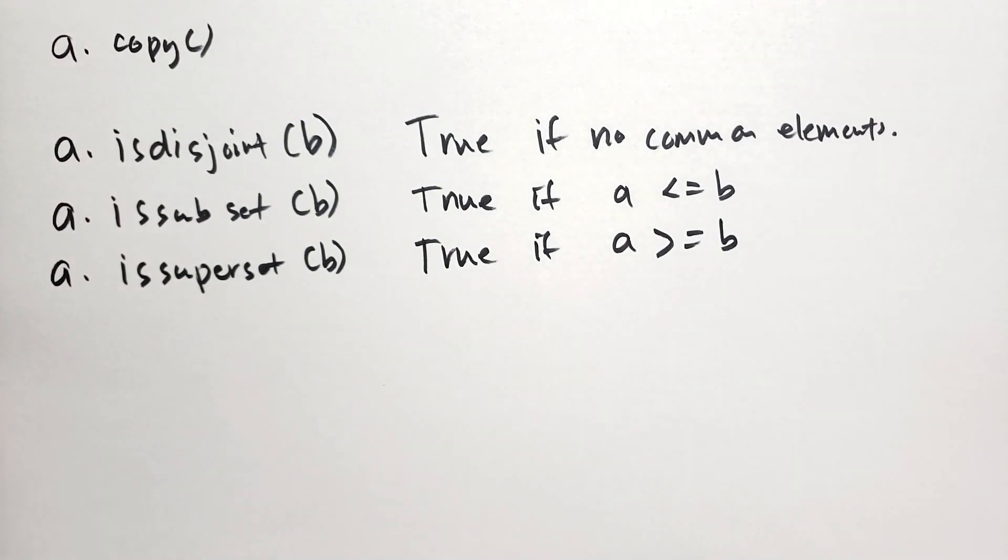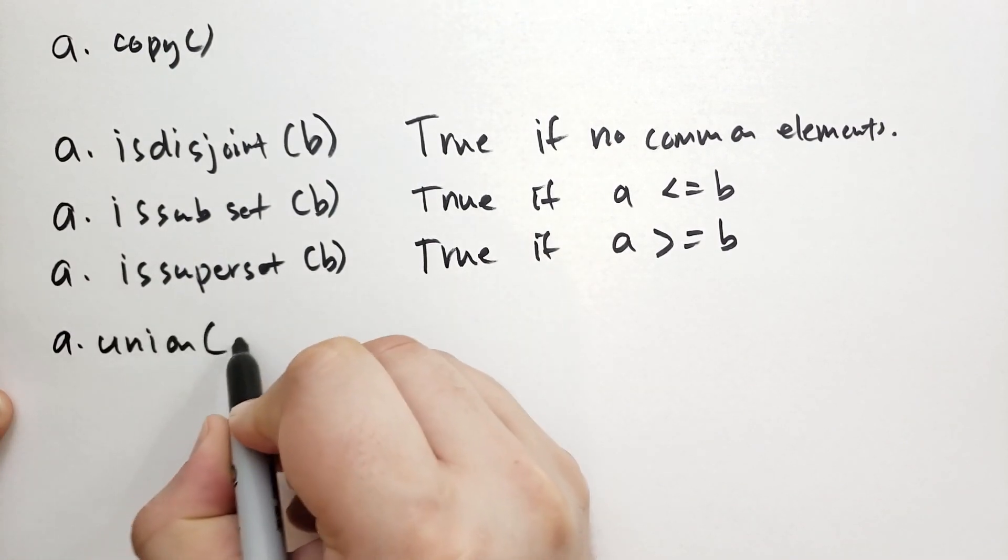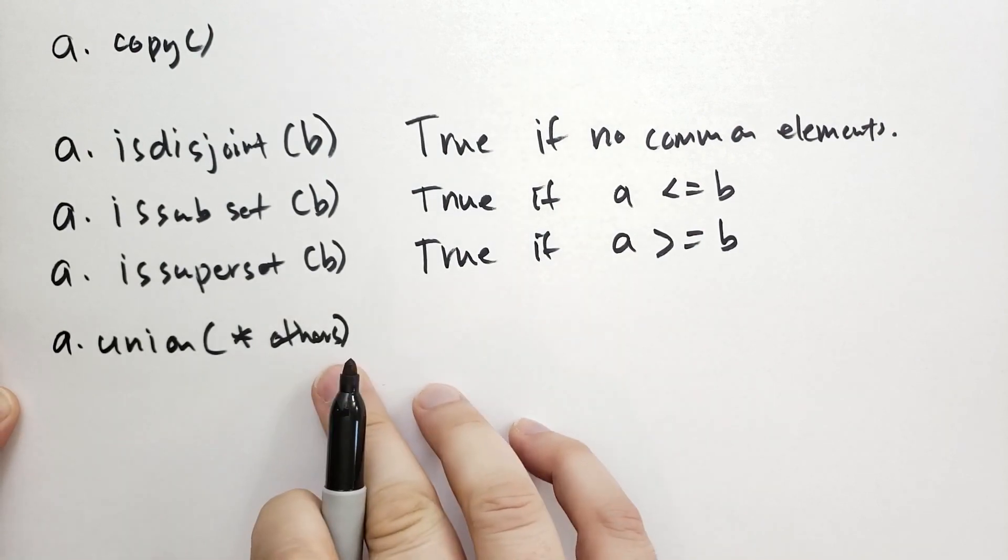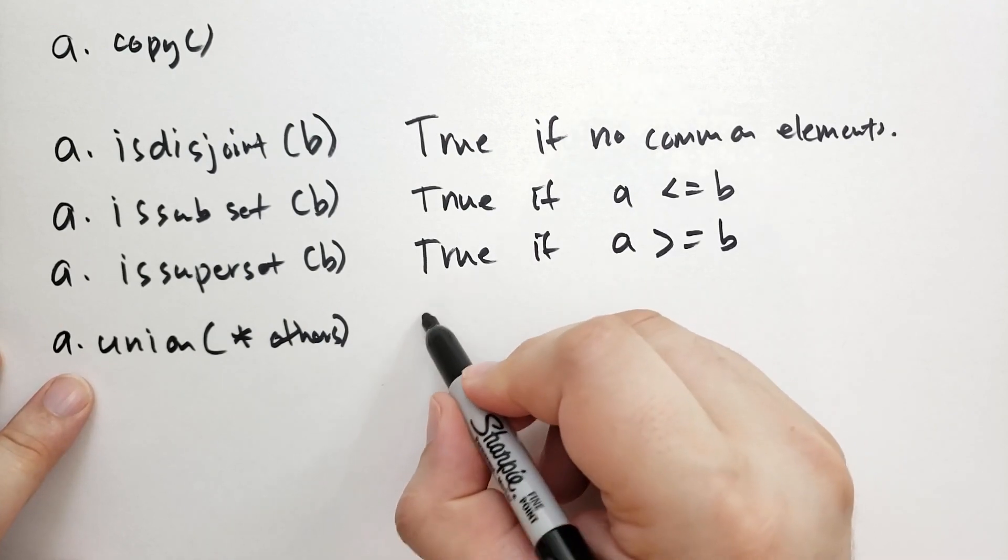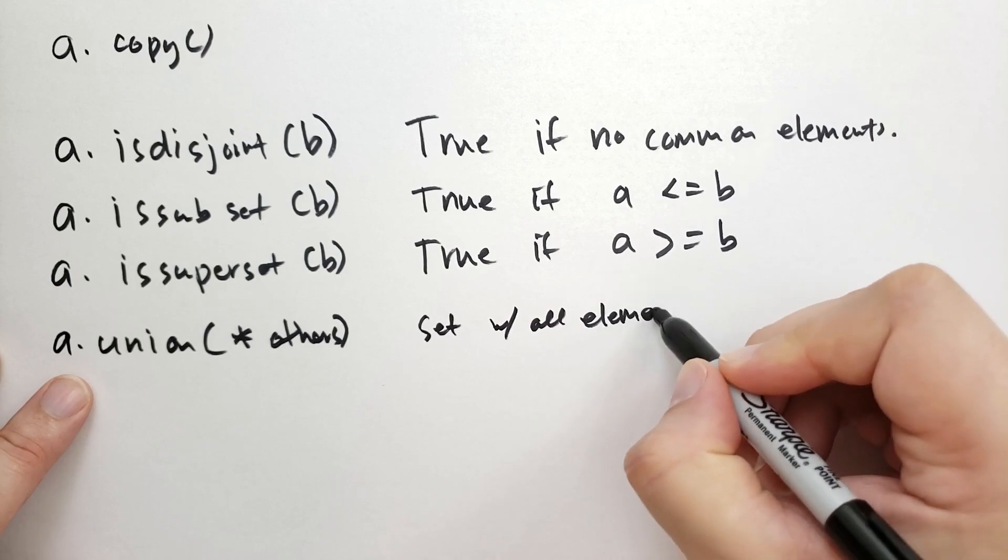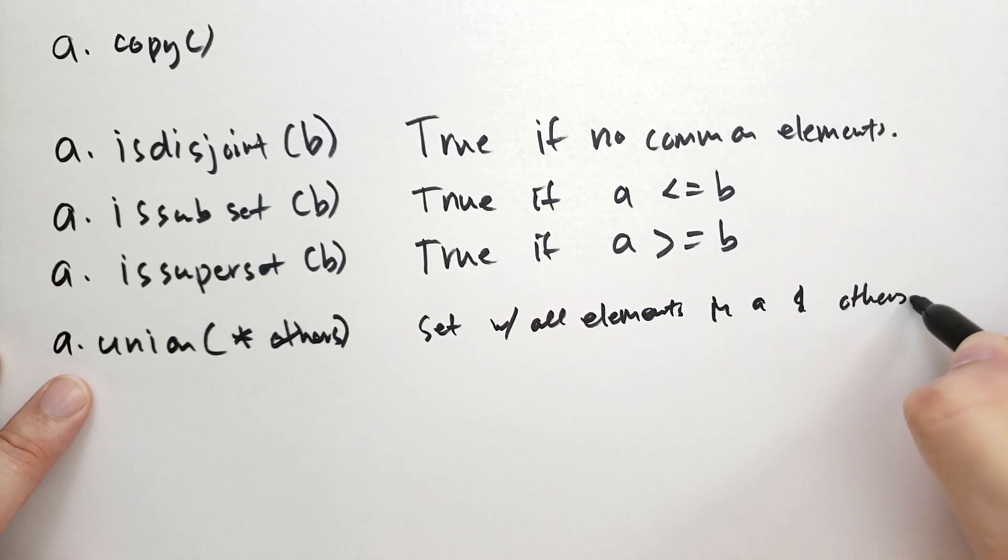We can combine sets to create new sets using these methods. So we have A dot union. And we're going to have star others. So you can specify one or more other sets to be union of. And this will return a set or frozen set with all the elements in A and the others.